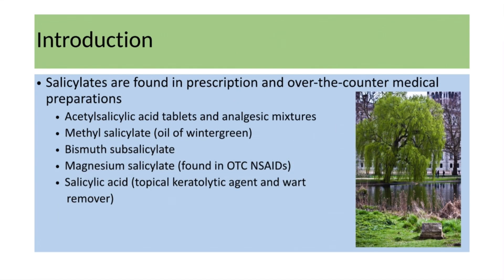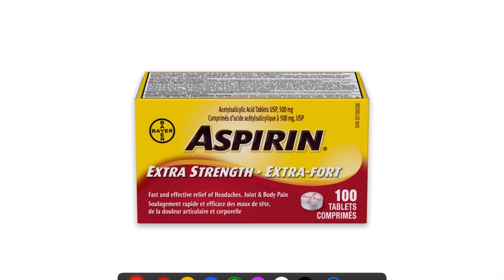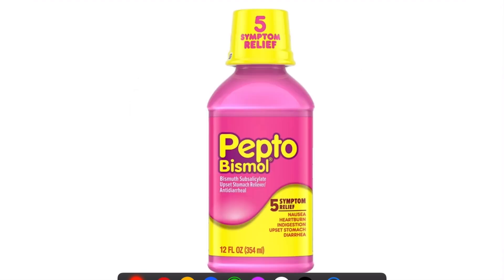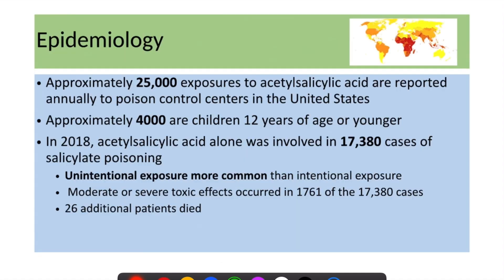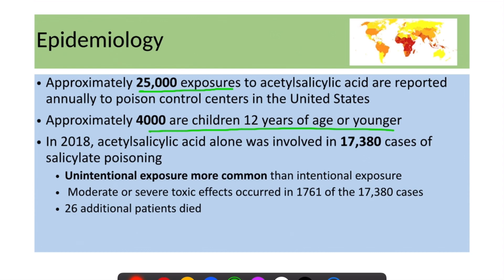Salicylates are found in many prescription and over-the-counter preparations like aspirin, antacids like bismuth subsalicylate, and oil of wintergreen. Approximately 25,000 exposures to acetylsalicylic acid are reported annually to poison control centers in the United States, and approximately 4,000 children 12 years of age or younger are among those. In 2018, acetylsalicylic acid alone was involved in 17,380 cases of salicylate poisoning.